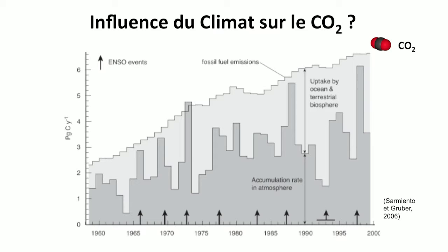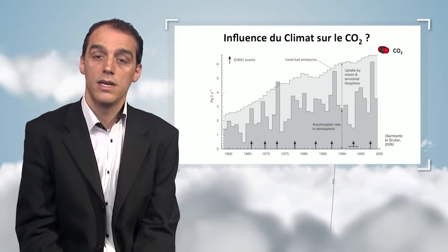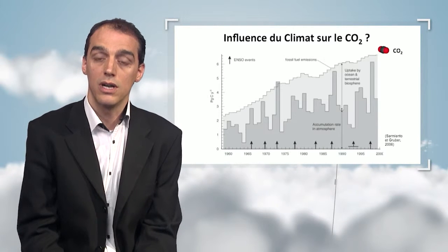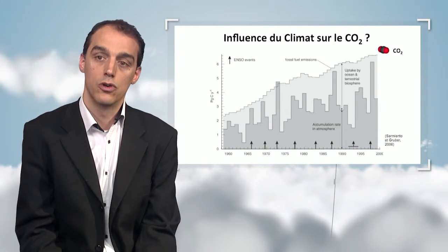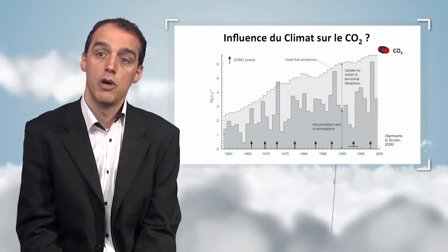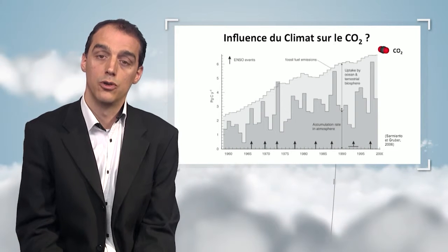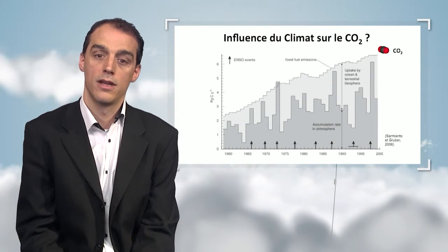Two curves here show the evolution following anthropogenic emissions, and in dark gray, the evolution of CO2 atmospheric concentration increase. There is no direct relationship between the two curves — the growth rate is lower or higher from one year to the next, not because anthropogenic emissions are greater, but because the climate varies naturally. Scientists have established a relationship between high growth rates in some years and natural climatic phenomena such as the El Niño event. During El Niño, CO2 concentrations increased faster because in areas like Indonesia, drought caused carbon to be released by vegetation.